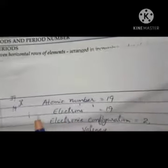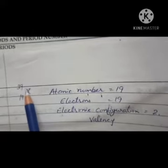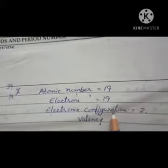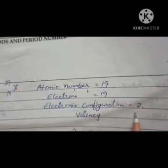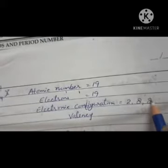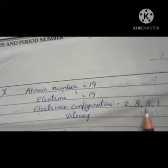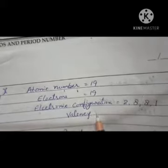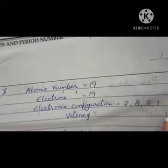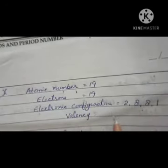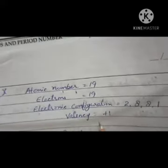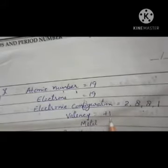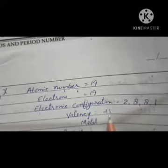Suppose an element has atomic number 19 and mass number 39. If atomic number is 19, the electrons are also 19. The electronic configuration is 2, 8, 8, 1. Its valency would be +1 because to get a stable electronic configuration, it will lose this 1 electron. It would be a metal because metals always lose electrons and have positive valency.